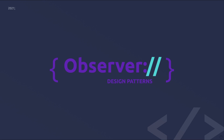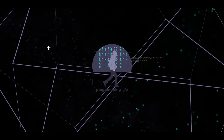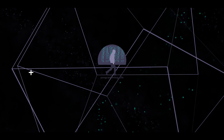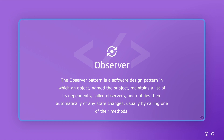Today we continue our series of design patterns with the observer pattern. The observer pattern is a software design pattern in which an object named the subject maintains a list of its dependents called observers and notifies them automatically of any state changes, usually by calling one of their methods. The observer pattern is a behavioral design pattern.